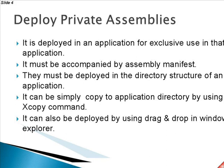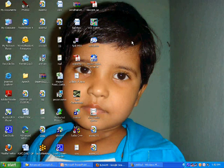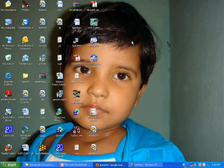We discuss some methods to deploy a private assembly. Once testing is over, it can be deployed simply by using a copy command like xcopy. A private assembly can also be deployed using a drag-and-drop method in Windows Explorer. To see assembly information, we can use the ILDASM tool, also known as the MSIL Disassembler. Now I will show you how to use the ILDASM tool.